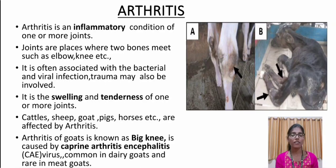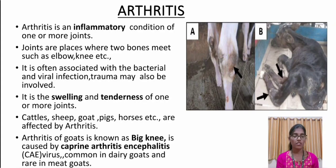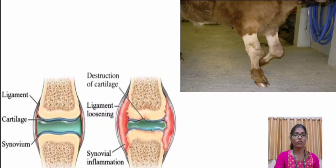Arthritis affects a very large group of animals which includes cattle, sheep, goats, pigs, etc. Arthritis of goats is known as 'big knee.' The name is given so because adult goats develop swelling of one or more carpal joints. It is caused by a virus called Caprine Arthritis Encephalitis, which is common in dairy goats but rare in meat goats.